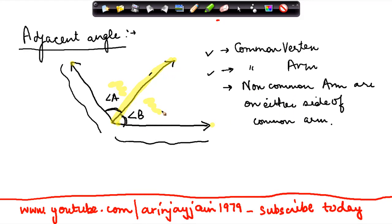So this is the non-common arm for angle B, this is the non-common arm for angle A, and these are on either sides of the common arm. It is not that both of them are on the same side.